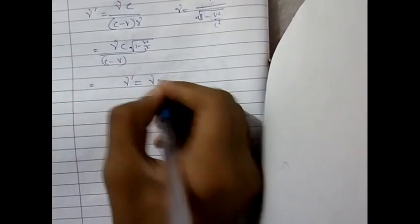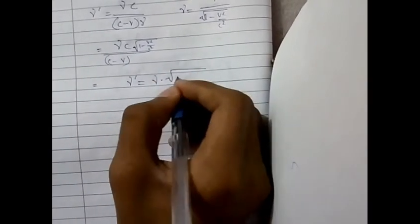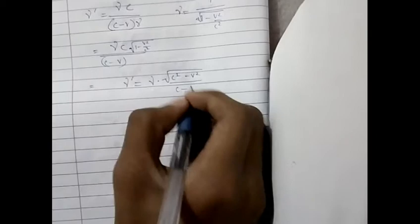We have to make it a bit more clear, we can just write it as nu prime equals nu times under root C square minus V square over C minus V.